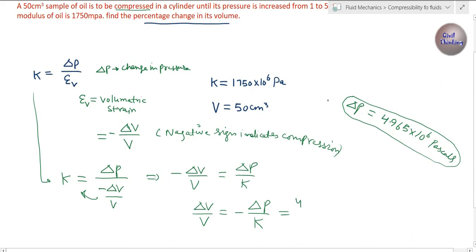ΔP is 4.965 × 10^6 pascals, and K is 1750 × 10^6 pascals. Δv upon v is the change in volume with respect to original volume. If we multiply this by 100, we get 100 multiplied by Δv upon v.